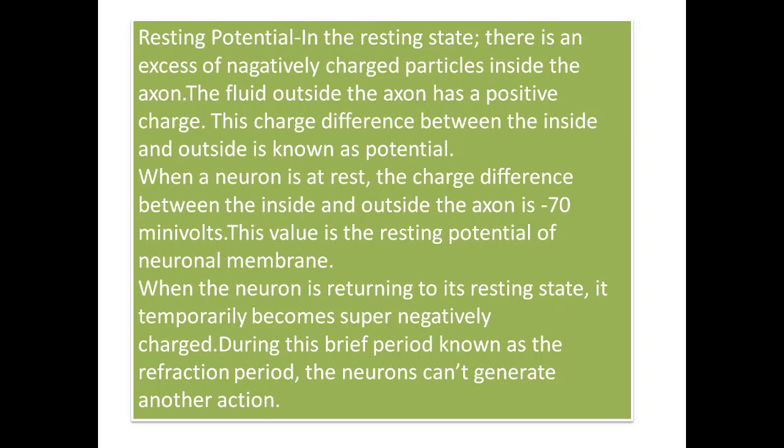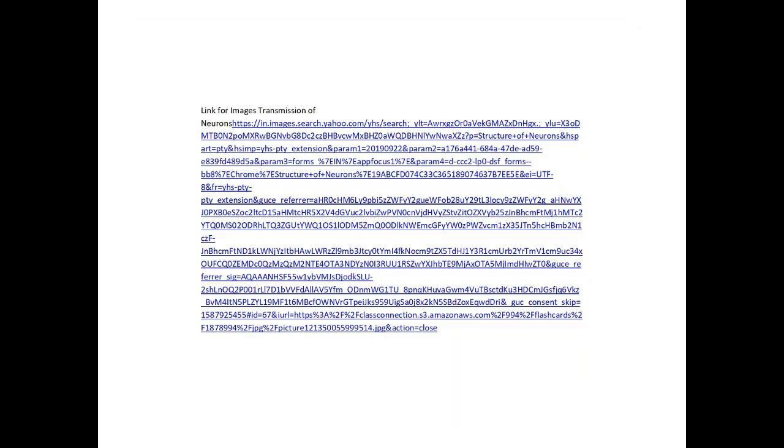In the resting state, there is an excess of negatively charged particles inside the axon, while the fluid outside the axon has a positive charge. This charge difference between the inside and outside is known as potential. When a neuron is at rest, the charge difference is minus 70 millivolts — this value is the resting potential of the neuronal membrane. When the neuron is returning to its resting state, it temporarily becomes super negatively charged. During this brief period, known as the refractory period, the neuron cannot generate another action potential.